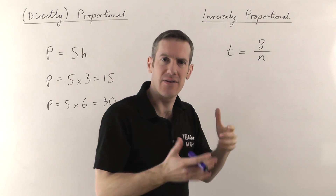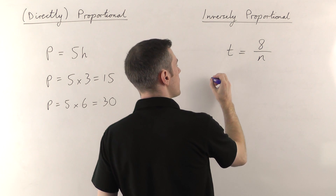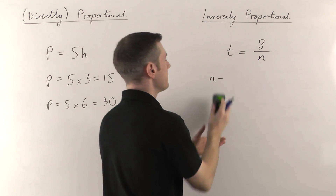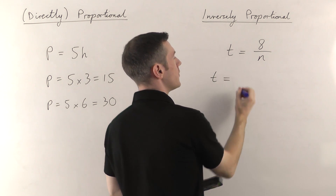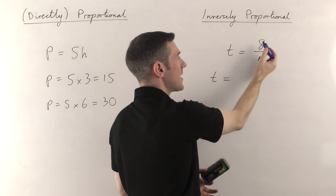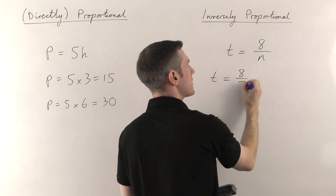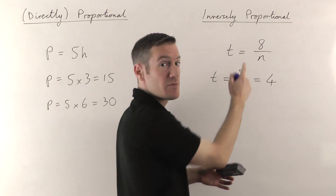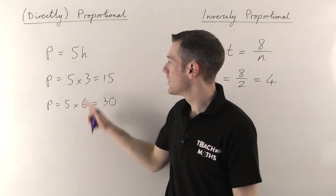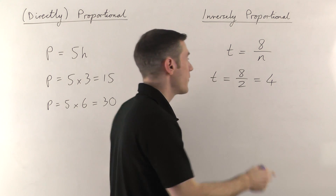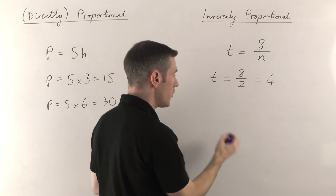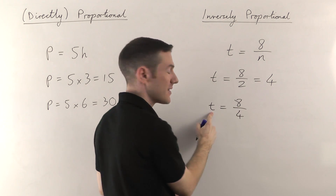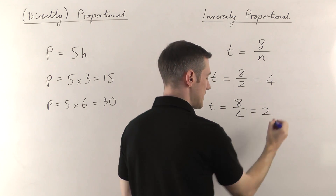Let me give you some examples. If two people mow the lawn, n is 2, so the time it takes will be 8 divided by 2, which is 4 hours. But if we doubled the number of people from 2 to 4, then n is 4 and the time it takes is 8 divided by 4, which is now 2 hours.